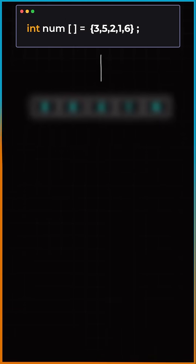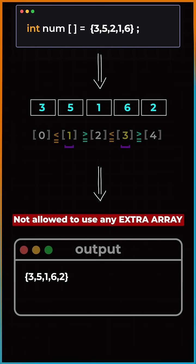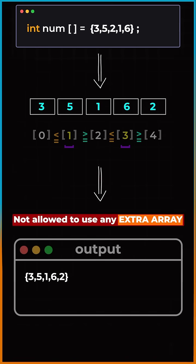So if we wiggle this array, one of the output can be 3, 5, 1, 6, and 2. Note, we are not allowed to use any extra array here.